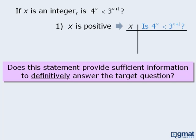So to begin, if x is positive, x could equal 1. We'll go down here to compare 4 to the power of x with 3 to the power of x plus 1 when x equals 1. If x equals 1, then 4 to the power of x will equal 4, and 3 to the power of x plus 1 will equal 9. So when x equals 1, the answer to our target question is yes — 4 to the power of x is less than 3 to the power of x plus 1.